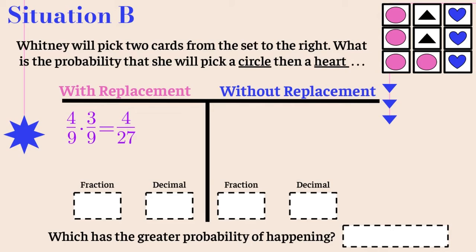Now without replacement: the first pick is four out of nine. This time we remove one of the circle cards, leaving eight cards total. So the second pick is three out of eight. Four times three is twelve, nine times eight is seventy-two, and twelve over seventy-two reduces to one sixth.